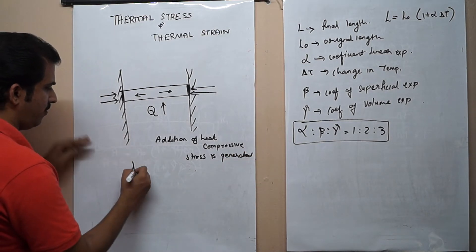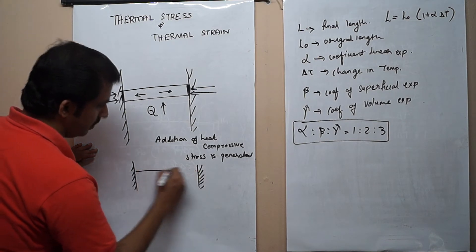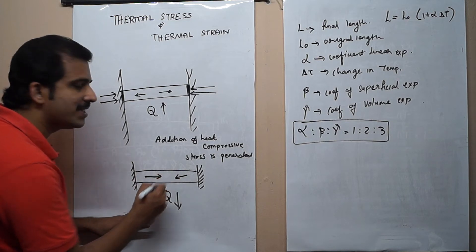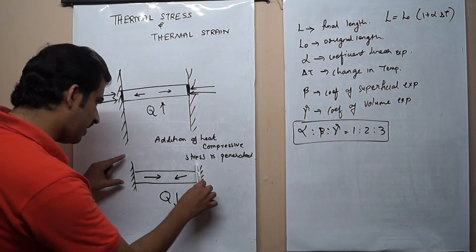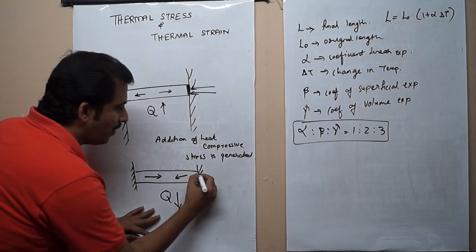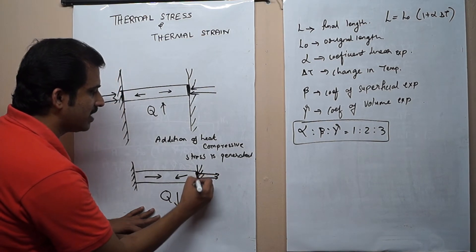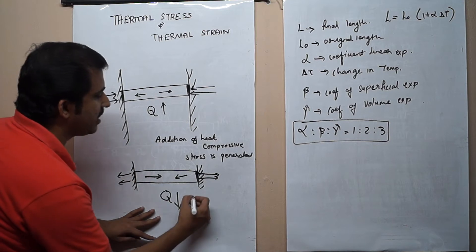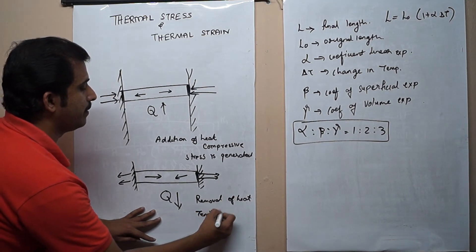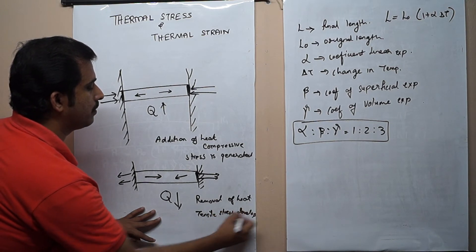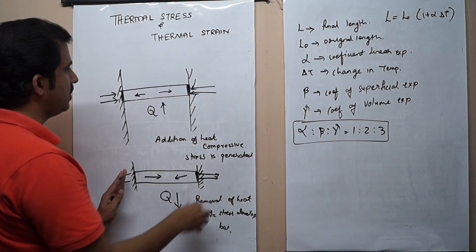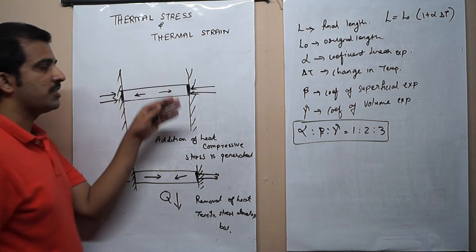Now what will happen if we let the metal bar cool down? When the heat is removed, the metal bar tries to contract itself. But that will not happen because the rigid walls will try to suppress that movement — the walls will pull it back. So there is a tensile force acting on the ends. During the removal of heat, tensile stress will develop in the bar. This tensile stress and compressive stress generated under these conditions are known as thermal stress, and the corresponding strain is known as thermal strain.